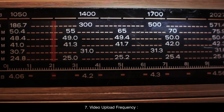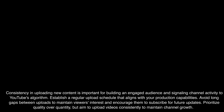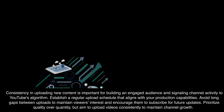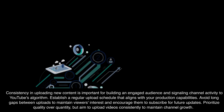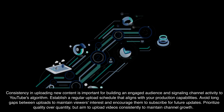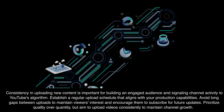7. Video Upload Frequency. Consistency in uploading new content is important for building an engaged audience and signaling channel activity to YouTube's algorithm. Establish a regular upload schedule that aligns with your production capabilities. Avoid long gaps between uploads to maintain viewers' interest and encourage them to subscribe for future updates. Prioritize quality over quantity, but aim to upload videos consistently to maintain channel growth.